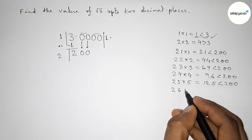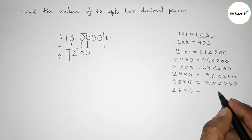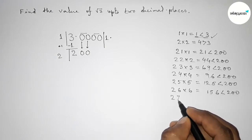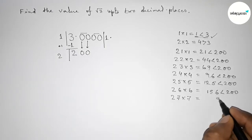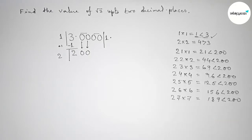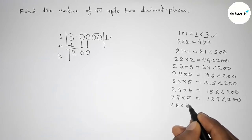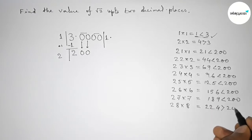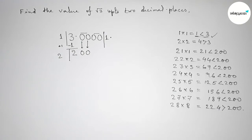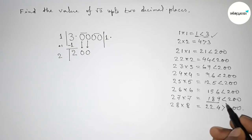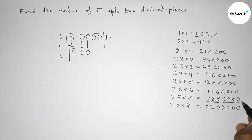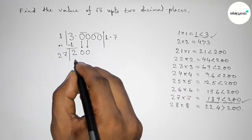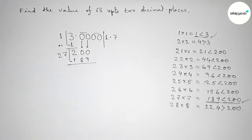Now taking 6: 26×6 = 156, which is less than 200. Now putting 7: 27×7 = 189, which is less than 200. Now putting 8: 28×8 = 224, which is greater than 200. So we take 7, since 189 is almost near and less than 200. Write down 189 and subtract from 200.